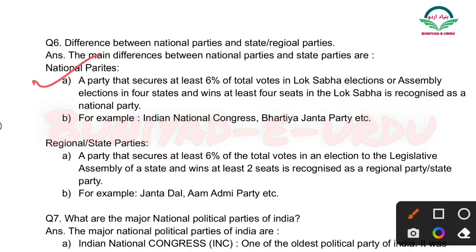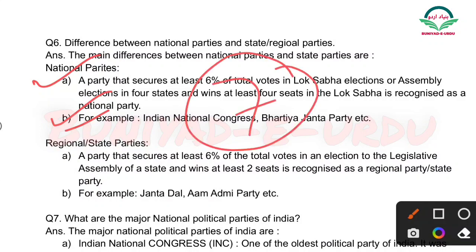Ek party jo Lok Sabha ke election mein kam se kam 6 percent votes ke saath jithe, toh hum usko national party ka naam dete hain. Ya agar ek party 4 states mein 4 seaton ke saath jiiti hai toh wo party national party hogi. For example, Indian National Congress ya Bharatiya Janata Party — ye national parties hain.